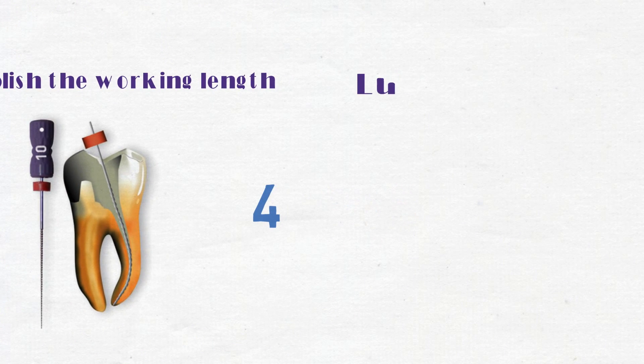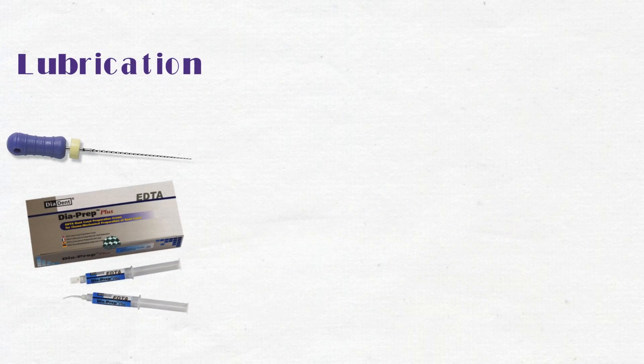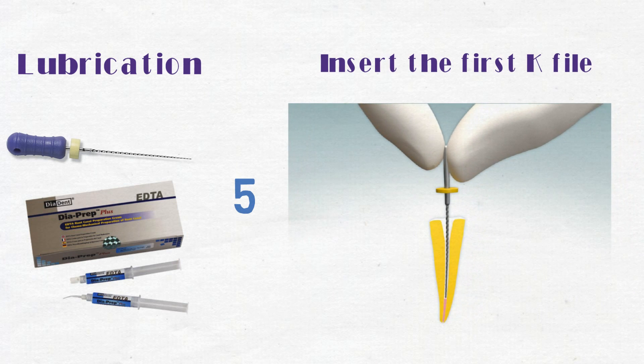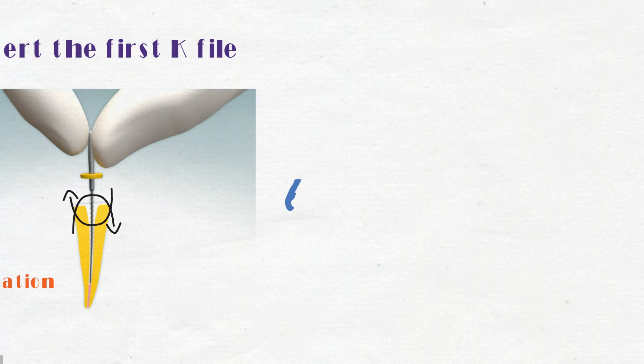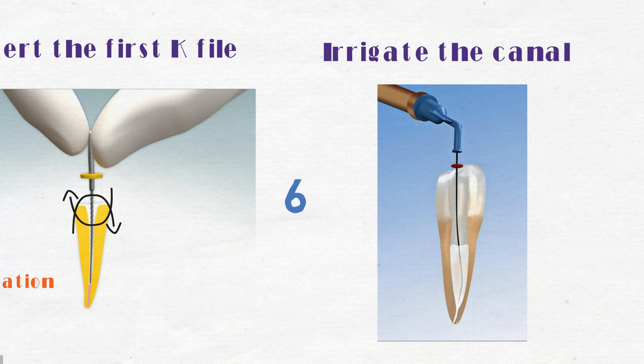First, lubricate the instrument for using in the apical area by EDTA or other lubricant. Now, insert the first K file into the canal considering the working length with gentle clockwise and anti-clockwise rotation of the file with minimal apical pressure. Remove the instrument and irrigate the canal.